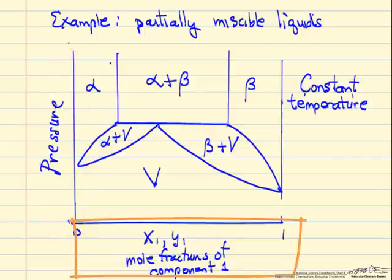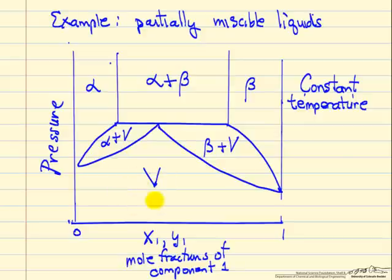The mole fraction of component one. At the low pressures, in this case we have vapor phase, and as we increase the pressure, we have liquids. Alpha phase is a completely miscible liquid. Beta is a completely miscible liquid.